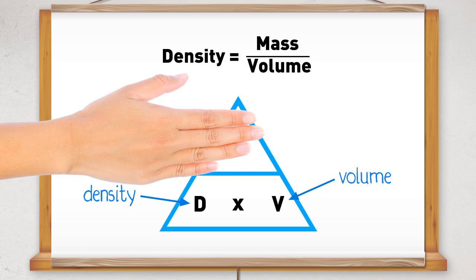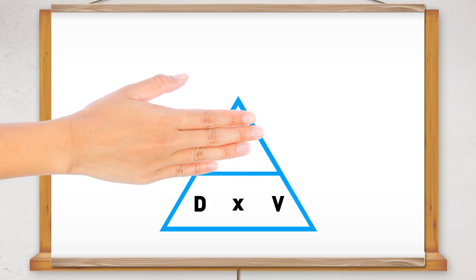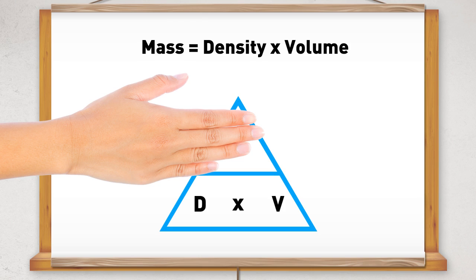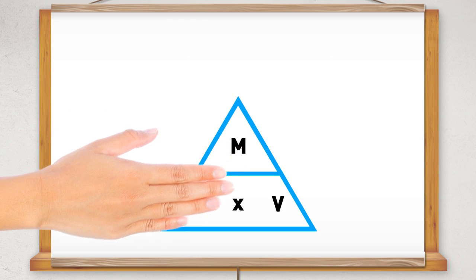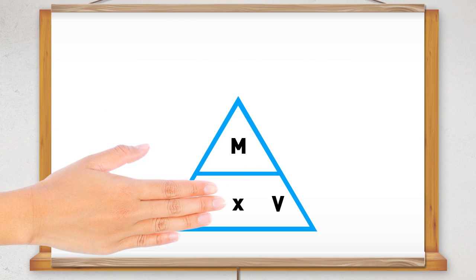If we want to calculate the mass, we cover up the M, which gives us the calculation density times volume. If we want to calculate the density, we cover up the D, which gives us the calculation mass divided by volume.